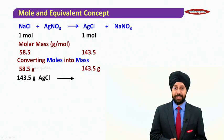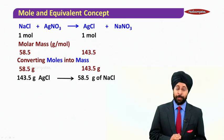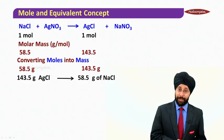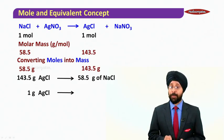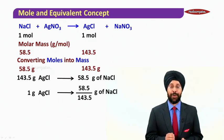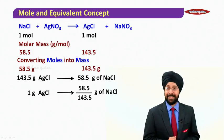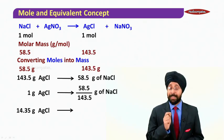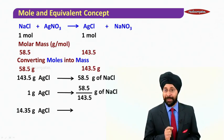143.5 grams of AgCl is going to be produced by 58.5 grams of NaCl. So 1 gram of AgCl is going to be produced by 58.5 divided by 143.5 grams of NaCl. Now we are getting 14.35 grams of AgCl.